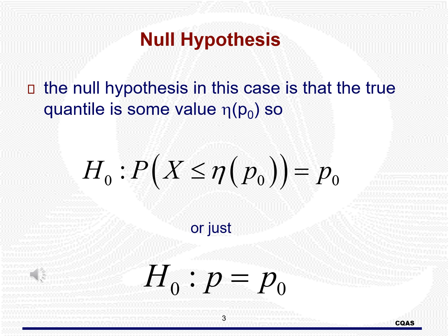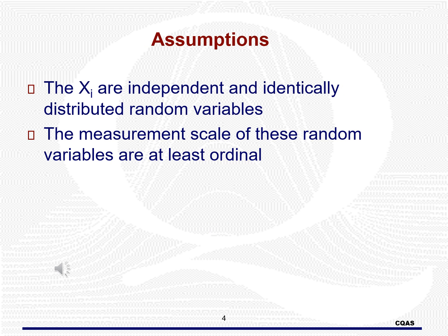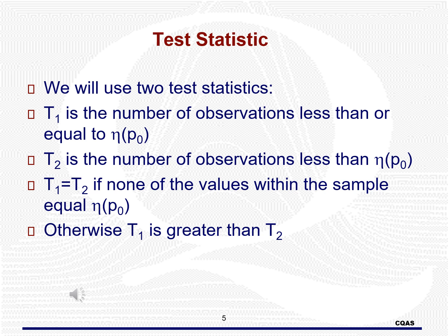The assumptions are that each observation is independent and identically distributed, and that the measurement scale of the data is at least ordinal. For the test statistics, we will have two: T1 will be the number of observations less than or equal to the hypothesized quantile value, and T2 will be the number of values less than the hypothesized quantile value. T1 equals T2 if no observation is equal to the hypothesized quantile; otherwise, T1 > T2.